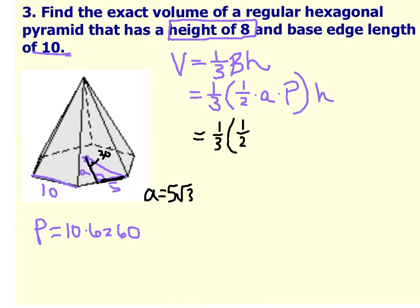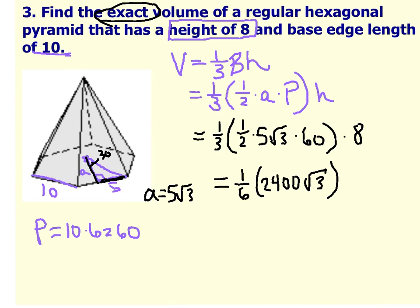1 third times 1 half times 5 root 3 times 60 times 8. Notice back in the directions that we want to keep it exact. When I multiply 1 third times 1 half, multiply fractions, it is 1 over 6. And if I multiply 5 times 60 times 8, we get 2,400 root 3. And so if I do 2,400 divided by 6, I get 400 root 3, and that is cubic units.